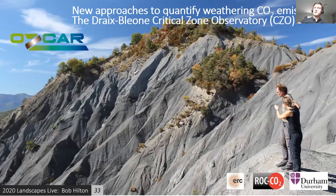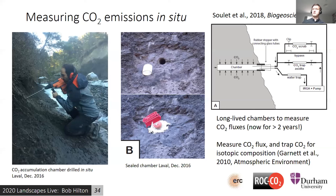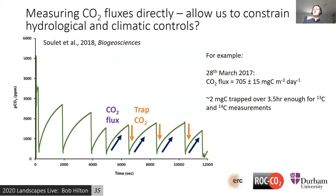We've also been trying to look at these fluxes more directly, working in a French drastic critical zone observatory. Instead of using rhenium or sulfate carried in river water, we're creating a chamber within a naturally fractured rock face that's undergoing weathering and measuring the CO2 that builds up, quantifying flux and confirming where the carbon is coming from. We trap the gas and measure its radiocarbon activity to work out its source. This allows us to visit a site and build up a measurement series of fluxes, examining how hydrology and climate controls these emissions.